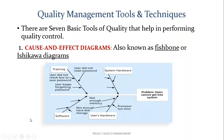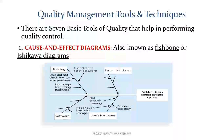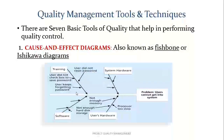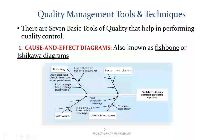There are seven basic tools of quality that help in performing quality control. The first tool helps you explore the causes that might be producing the problem. It is very important to know the real cause of the problem before thinking of any possible solution. The fishbone diagram gives you a comprehensive list of possible causes to identify the root cause of the problem. In this diagram, the root cause of the problem is that the user cannot get into the system, and the possible causes are training, system hardware, software, and user's hardware.